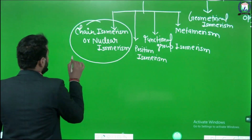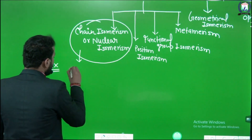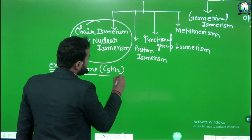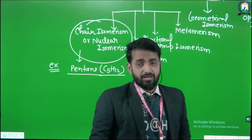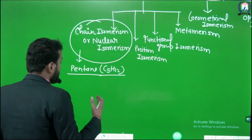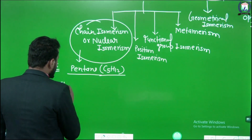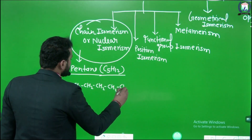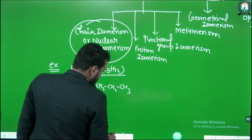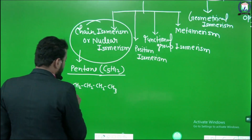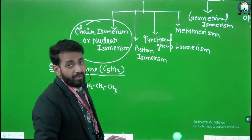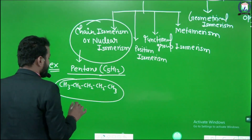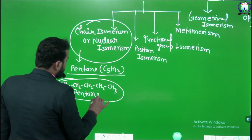For the example of chain isomerism, let us take pentane. Pentane has the molecular formula C5H12. We can represent pentane in different ways by changing the position of carbons in the chain. The first structure is a straight chain: CH3-CH2-CH2-CH2-CH3, which is called n-pentane.